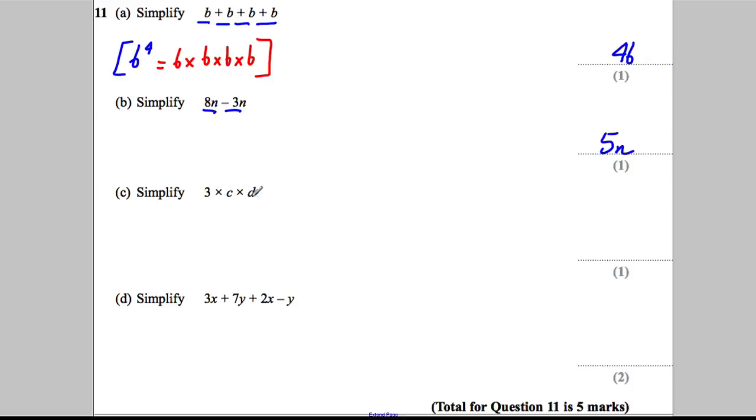3 multiplied by C multiplied by D. A mathematician would just remove the multiplication signs and write 3CD. They would just get rid of that sign, get rid of that sign and put them together.